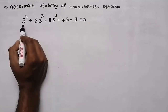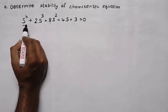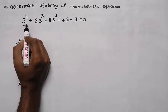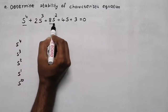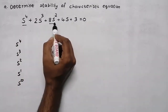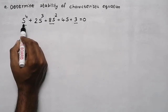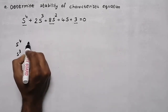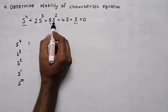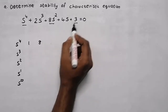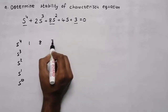Now, take the first element and its alternative elements — first element, second element, third element. Alternative element means after the first element, take the third element, then after the third element, take the fifth element. The coefficient for s raised to 4 is 1, the coefficient for s squared is 8, and here it is 3.